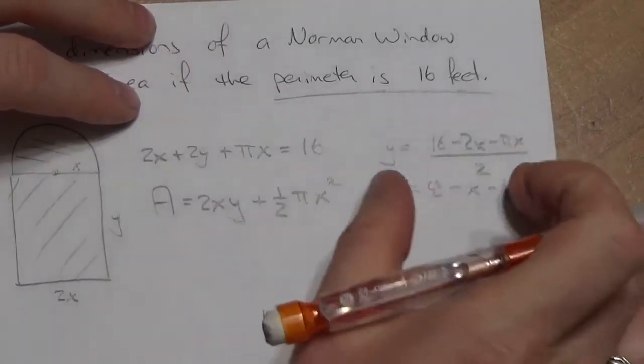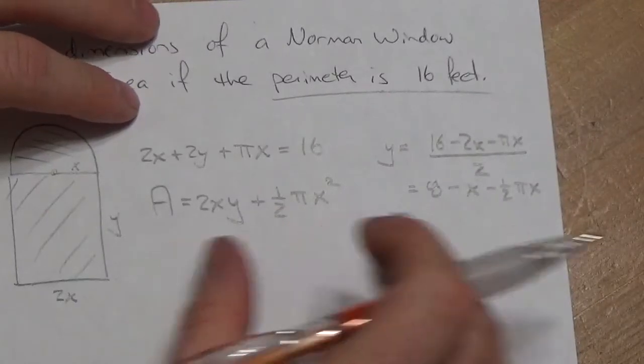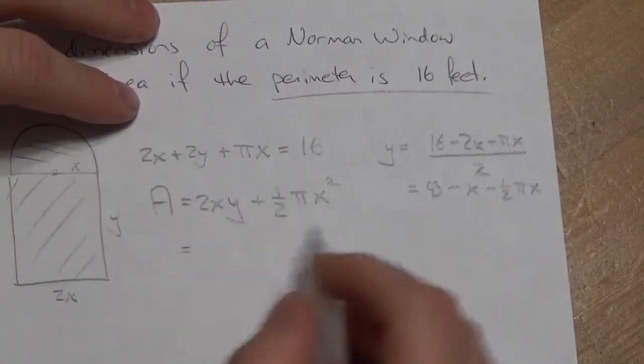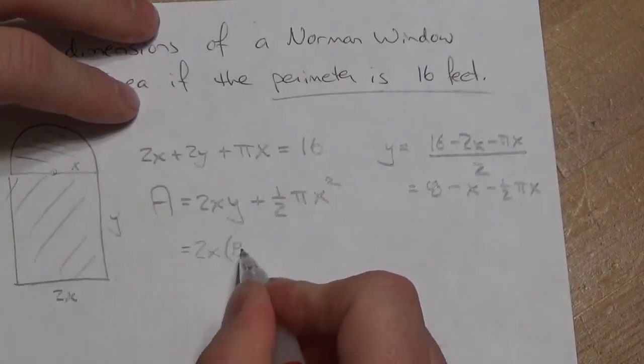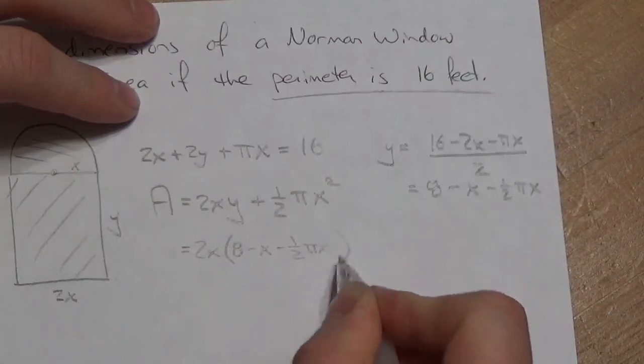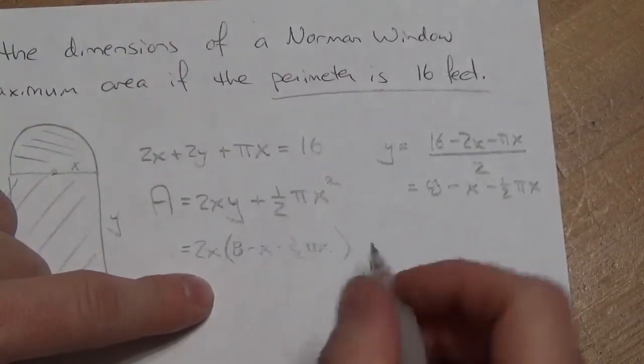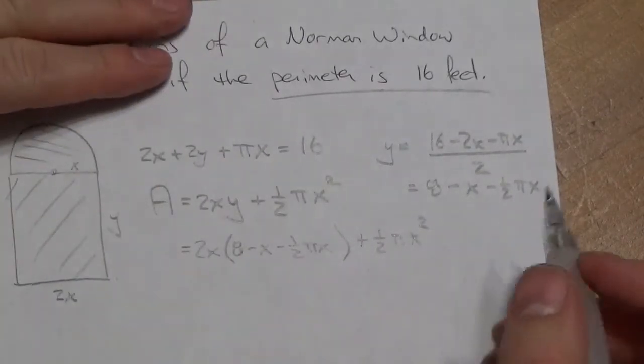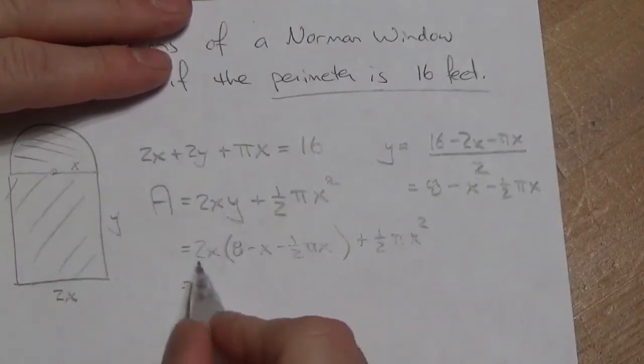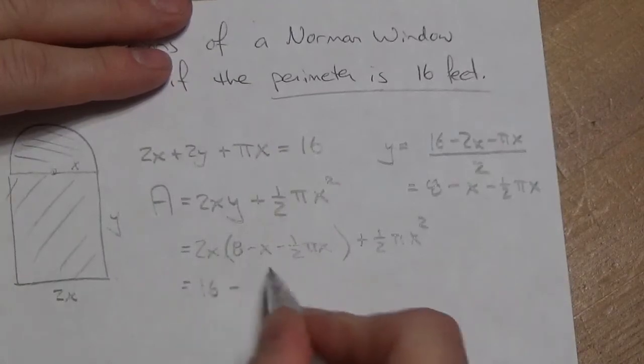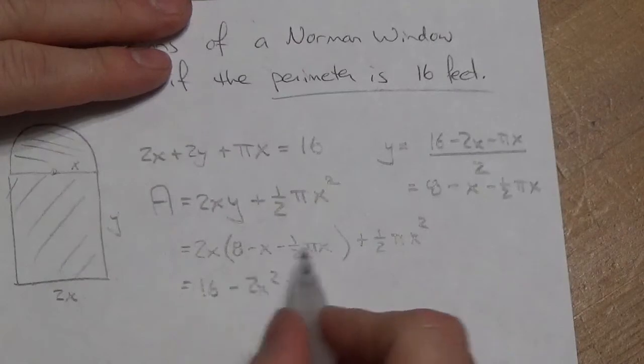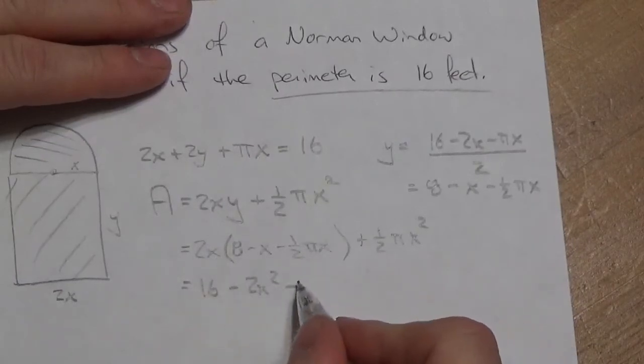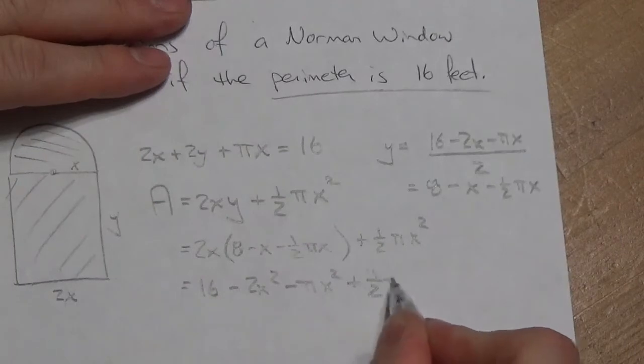Okay, now, actually I didn't really need to do that because of what my expression looks like, but that's okay. So, I wanted y equal to that expression. So, now I'm going to substitute that into my expression for the area. 2x times 8 minus x minus 1/2 πx. So, that's going to be 2x, that's the y, plus 1/2 πx². Okay, now I'm going to distribute the 2x through. So, it'll be 16x minus 2x², then the 2x multiplied by the negative 1/2 πx. The 2 and a half will cancel. So, negative πx² plus 1/2 πx².